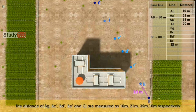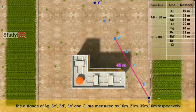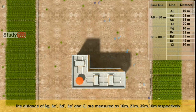The distances BG, BC', BD', BE', and CJ are measured as 10m, 21m, 35m, and 10m respectively.